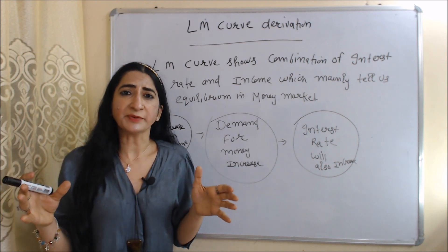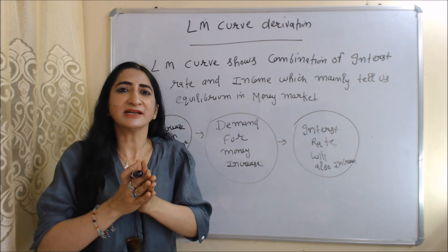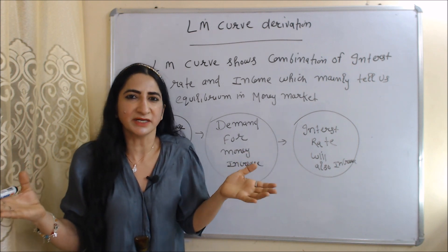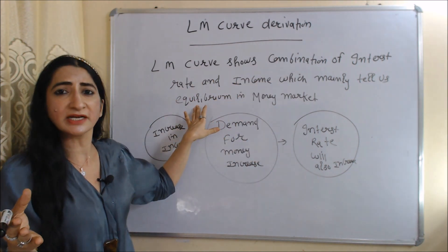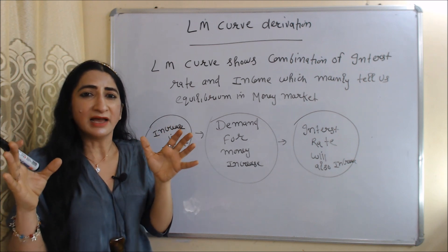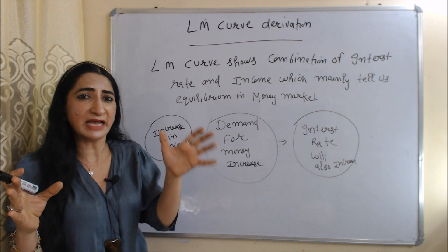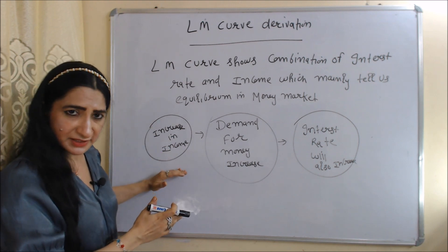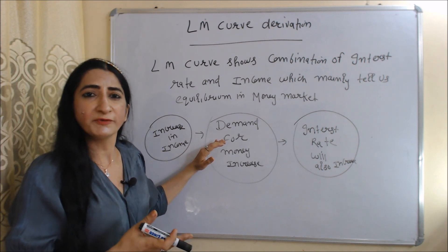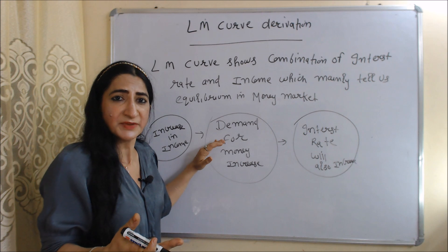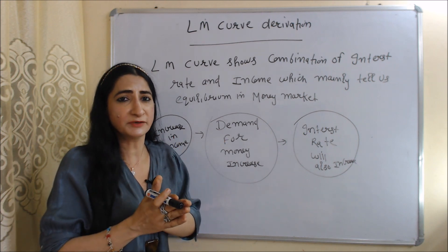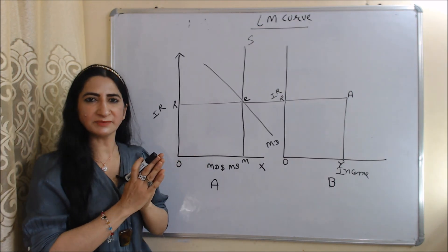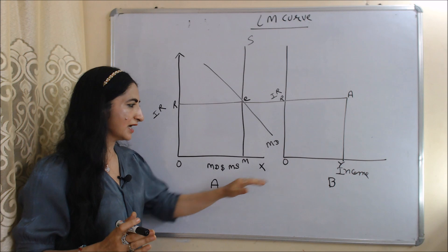Now we are going to talk about the LM curve and its derivation. L represents liquidity, or money demand; M represents money supply; and together LM represents money demand and money supply. The LM curve is a combination of interest rate and income which mainly tells us equilibrium in the money market. The process of equilibrium is: initially, income increases, so demand for money also increases, because people want to hold money for different motives. But money supply is constant, so as a result interest rate will also increase.